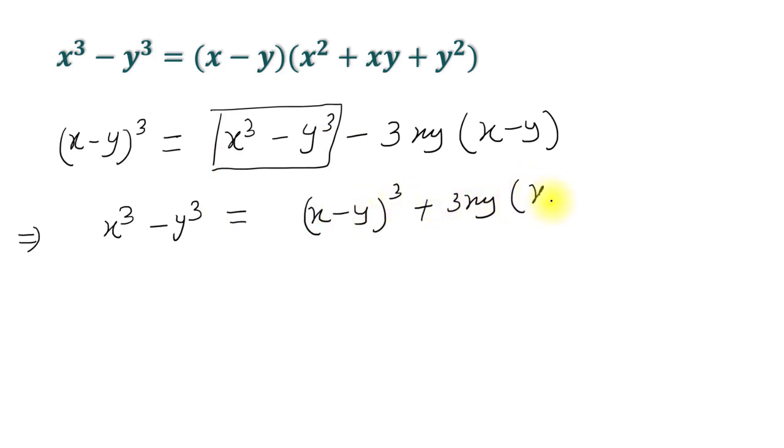Now we will take common factor (x - y) from both the terms, so we get (x - y)[(x - y)² + 3xy]. Now we will open (x - y)², we can write (x - y)(x² - 2xy + y² + 3xy).